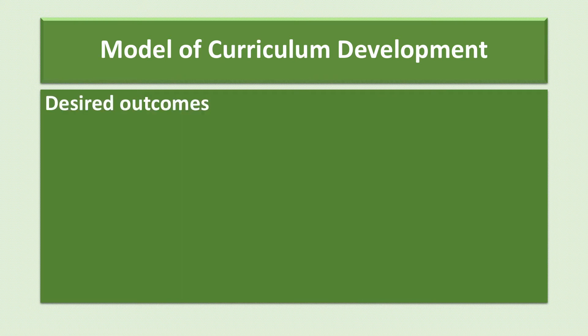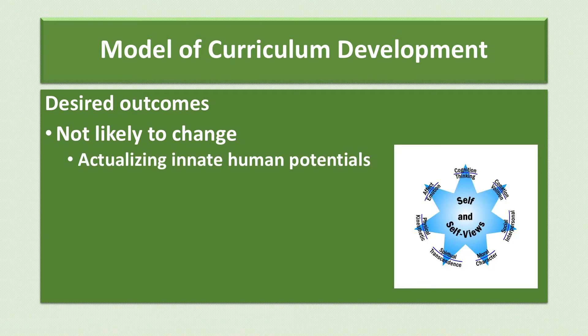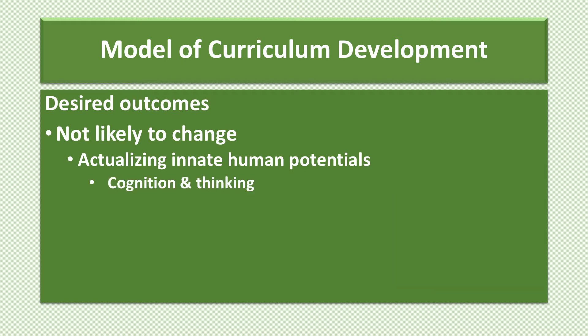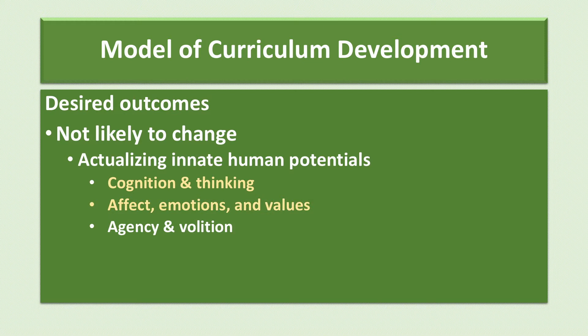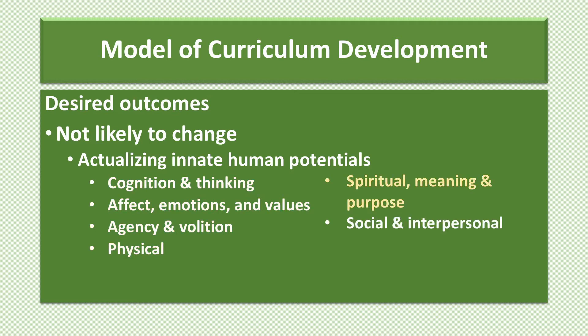When identifying desired outcomes, it's helpful to consider two categories: those not likely to change over the next decade or two, and those that must change. The stable outcomes include actualizing innate human potentials identified in domains of human growth and development research, such as aspects of cognition like critical or creative thinking, aspects of the affective domain such as understanding emotions and creating values, development of a sense of agency, physical conditioning, meaning and purpose in life, and social and interpersonal competencies and moral character.